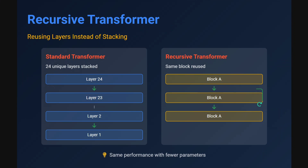Before we jump into Mixture of Recursions, we need to understand the recursive transformer. Instead of using separate layers at each level — layer 1, layer 2, layer 3 — in a recursive transformer we use the same block, which is a collection of layers repeated every time: block A, block A, block A. The same parameters are used throughout, so you only need to train one set of block parameters instead of 24 blocks. The weights trained are fewer, the model size is smaller, and it becomes more efficient.